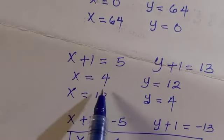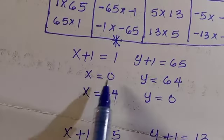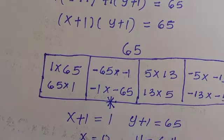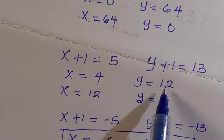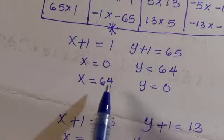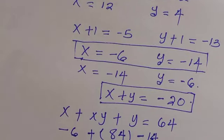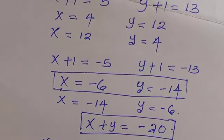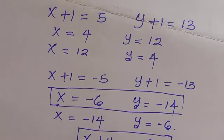Similarly, testing the other cases also gives true results. So x plus y equals negative 20 is one solution. We can also verify that 4 plus 12 gives positive 20, and 0 plus 64 gives 64. Therefore, all solutions for x plus y are 64, 20, and negative 20. Thanks for watching — if you have another way of doing this, drop it in the comment box, and don't forget to subscribe for more exciting math content. I'll see you in the next video — never stop learning, bye bye.